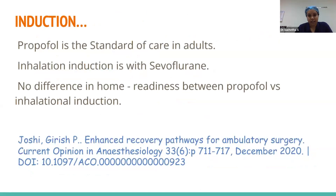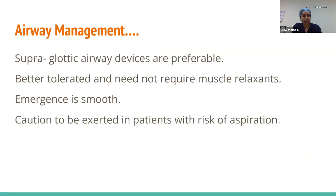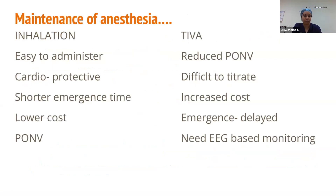For induction, propofol is the standard of care; for inhalation, sevoflurane is used. Supraglottic airway devices are preferred as they are better tolerated, require no muscle relaxant, and allow smooth emergence — with caution in patients at risk of aspiration. Maintenance of anesthesia is at the anesthetist's discretion. Inhalation is easy to administer and cardioprotective but carries higher post-operative nausea and vomiting. TIVA reduces PONV but increases cost, delays emergence, and requires EEG-based monitoring.